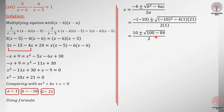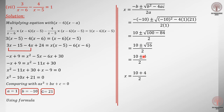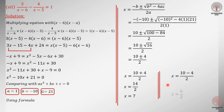Using the quadratic formula: minus b is minus(minus 10), which is plus 10, plus or minus the square root of b squared minus 4ac, divided by 2a. That gives 100 minus 84, which is 16. Is 16 a perfect square? Yes — it is the perfect square of 4. So x equals (10 plus or minus 4) divided by 2, giving x equals 7 or x equals 3.